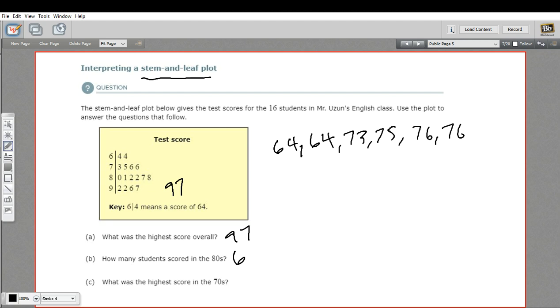The last question C says, what was the highest score in the 70s? Well, here are the 70s. I can just go to the end and that would be a 76. So 76 is the highest score in the 70s. And that is a little bit of work with interpreting a stem-and-leaf plot.